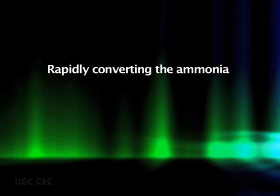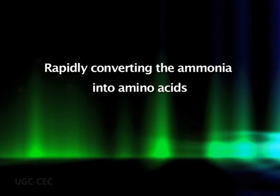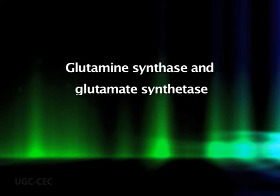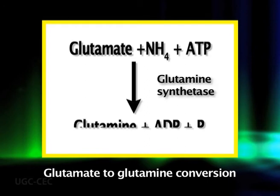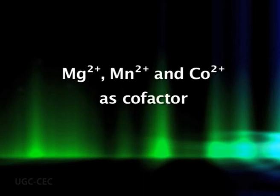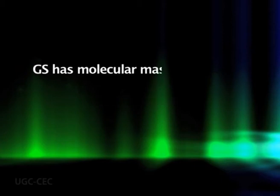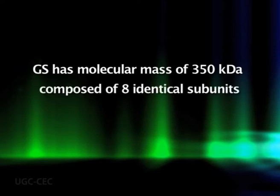After nitrate assimilation, let's have a look at ammonia assimilation. Plant cells avoid ammonium toxicity by rapidly converting ammonia generated from nitrate assimilation or photorespiration into amino acids. The primary pathway involves the sequential action of glutamine synthetase (GS) and glutamate synthase (GOGAT). Glutamine synthetase combines ammonia with glutamate to form glutamine. This reaction requires hydrolysis of one ATP and involves a divalent cation — such as Mg2+, Mn2+, or Co2+ — as a cofactor. GS has a molecular mass of 350 kilodaltons and is composed of 8 identical subunits.